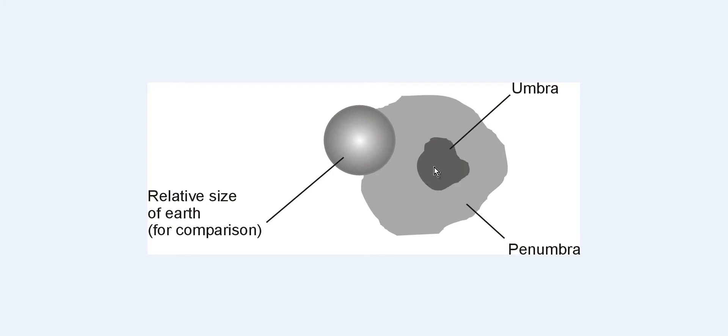The center part, the darkest part, is called the umbra, and the outer part is called the penumbra.